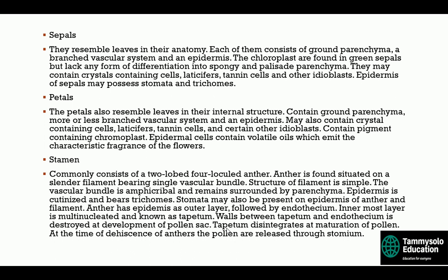The stamen commonly consists of a two-lobed, four-locular anther situated on a slender filament bearing a single vascular bundle. The structure of the filament is simple — the vascular bundle is amphicribral and remains surrounded by parenchyma. The epidermis is cutinized and bears trichomes. Stomata may also be present on the epidermis of the anther and filament.